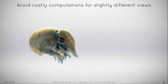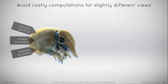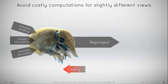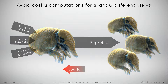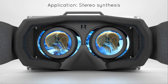Volume rendering can be arbitrarily complex if we use complex shading or global illumination and detailed geometry. The idea of reprojection is to reuse once-rendered information to produce slightly shifted views at low cost. One very obvious application for this is to generate a stereo pair from a single image, which can be used for an HMD where computational time is critical.